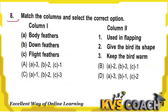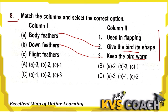Next question: match the column — types of feathers with their uses. Body feathers give the bird its streamlined body shape. Down feathers keep the bird warm. Flight feathers are used in flapping. So the matching is A2, B3, C1. Option B is the right answer.